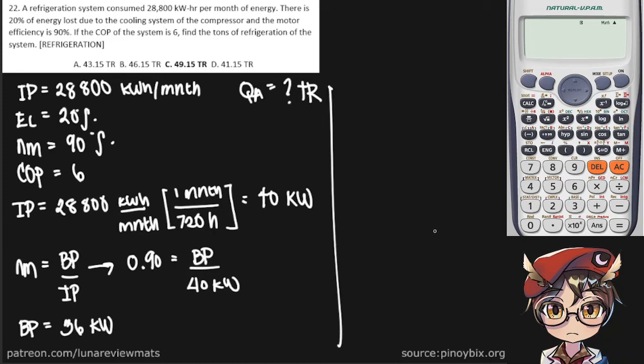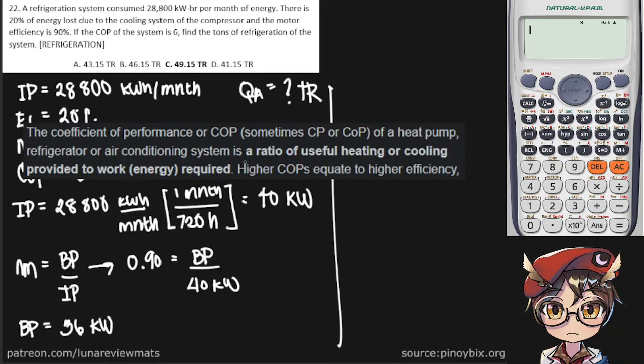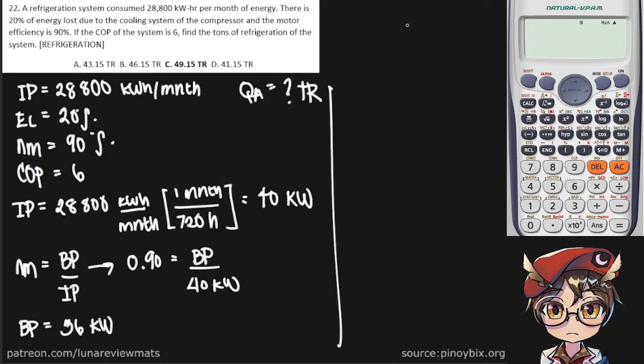So what is a coefficient of performance? Well, that is simply the ratio of useful heating or cooling, in this case cooling, provided to the work energy required. This is just the work of the compressor. Going by that definition, our COP is equal to the refrigerating effect divided by the work of the compressor.